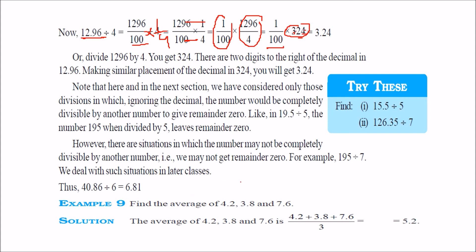Let us take one more example: finding the average of three numbers 4.2, 3.8, and 7.6. Add them: 4.2 plus 3.8 plus 7.6 gives 15.6. Divide by 3 to get the average of 5.2.